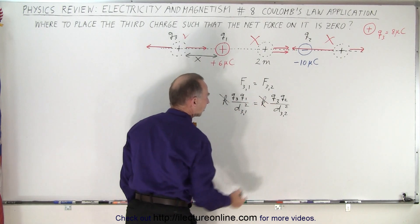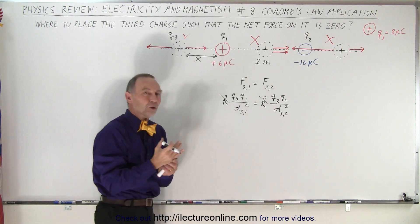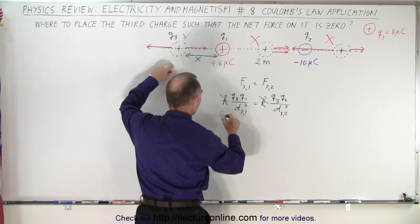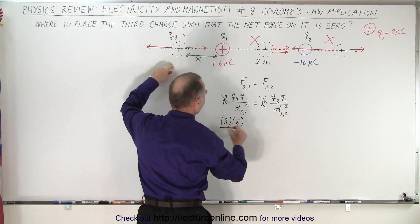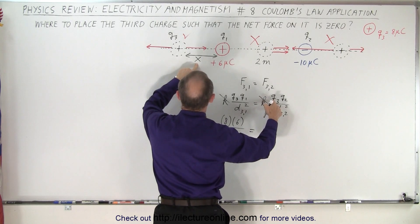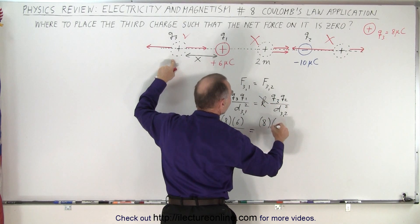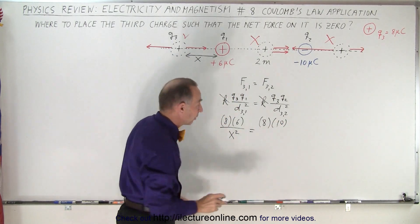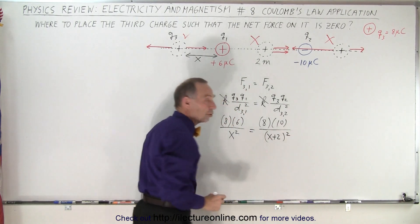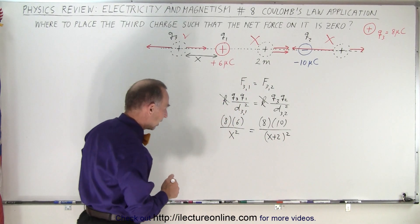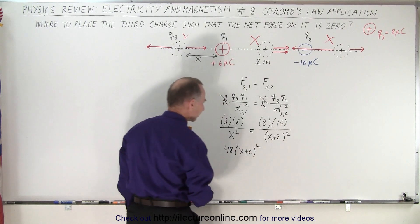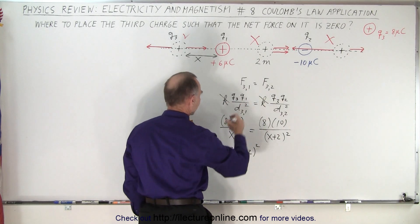Well, first of all, they both have a K that cancels out. Now we can plug in the values. We don't need to put the microcoulombs, we don't need to put 10 to the minus six because the numbers themselves will be good enough. So, Q3 that was eight microcoulombs times Q1 which is six microcoulombs divided by the distance between three and one that would be X and we have to square that, X squared. That must equal charge three which is eight microcoulombs, charge two which is ten microcoulombs. Again, we don't care if it's negative. We're just looking for the magnitude and we divide that by the distance which would be X plus two quantity squared. And all we have to do is solve this equation for X. We still have a little algebra to do. We have eight times six which is 48 times X plus two squared. And by the way, notice that they both have a Q3 so that cancels out.